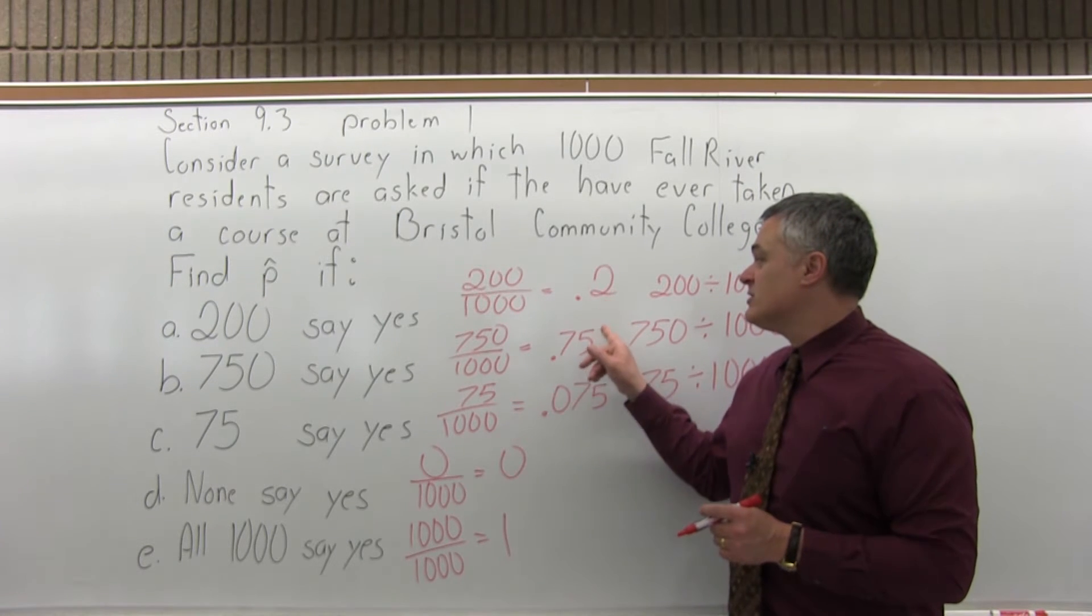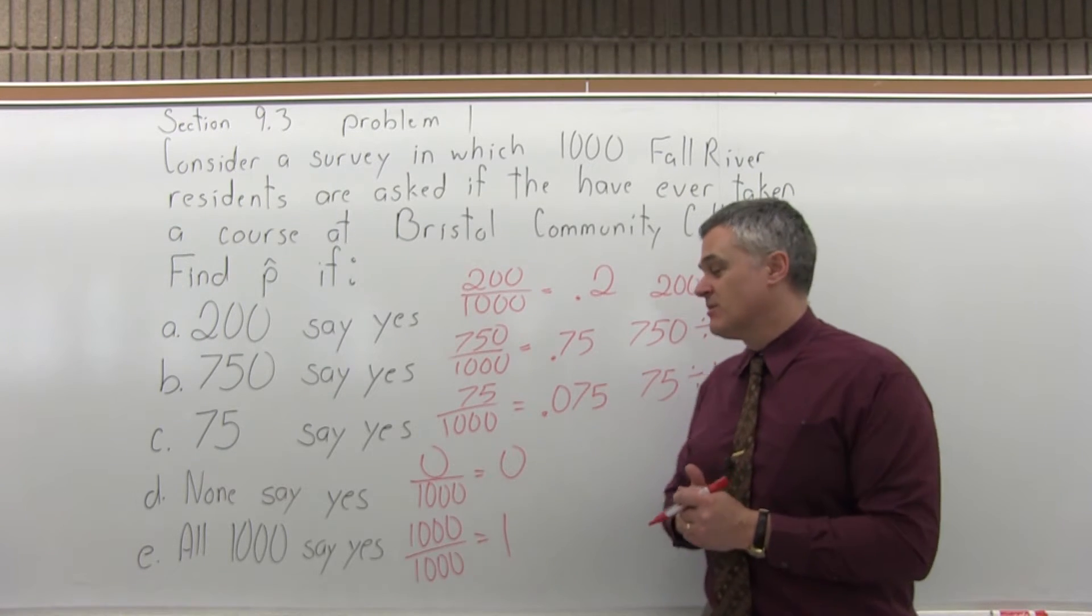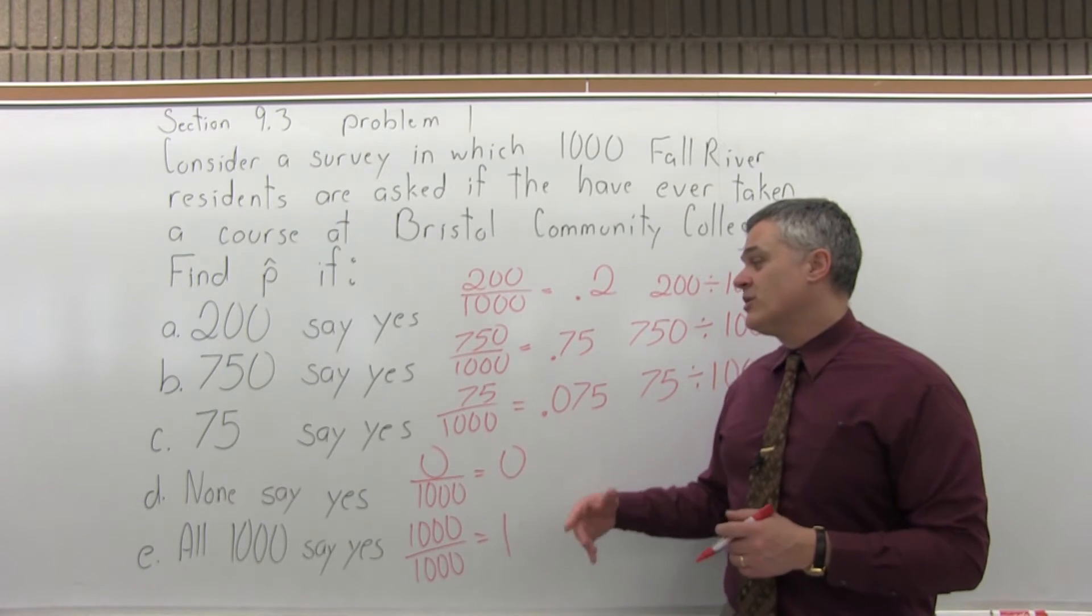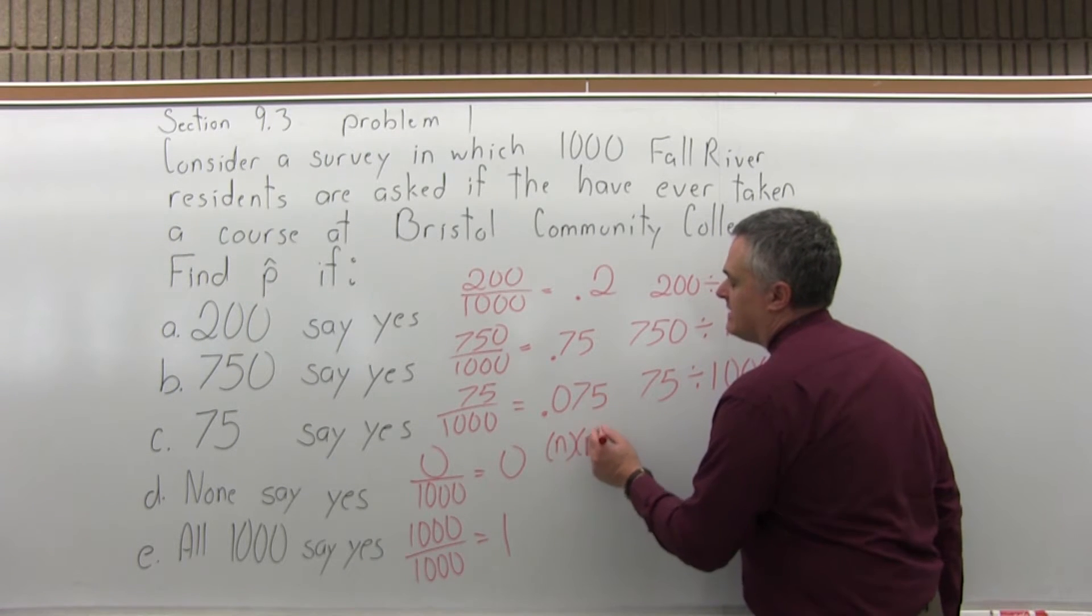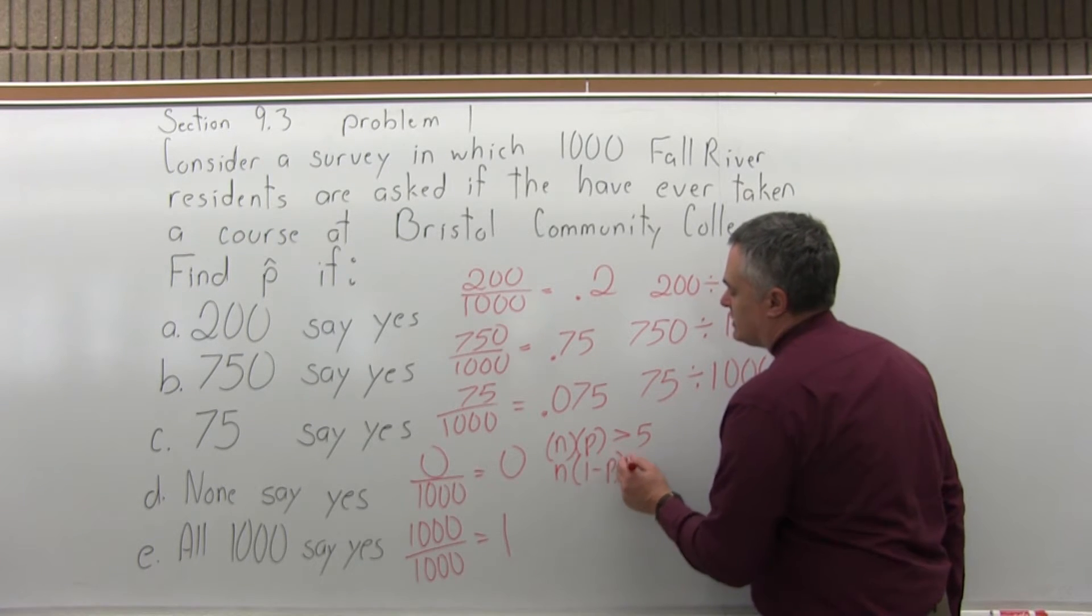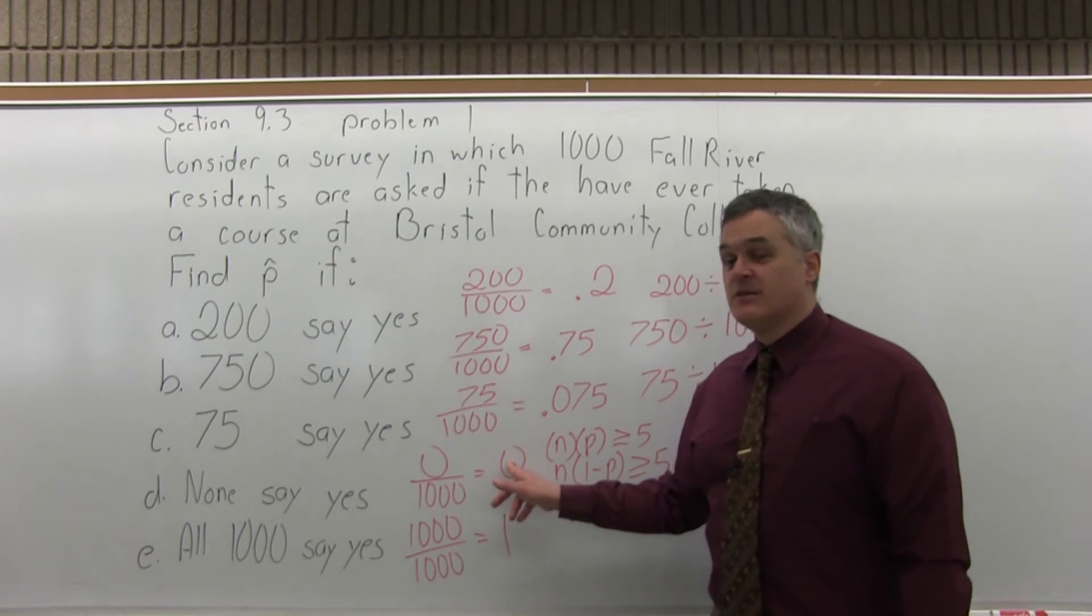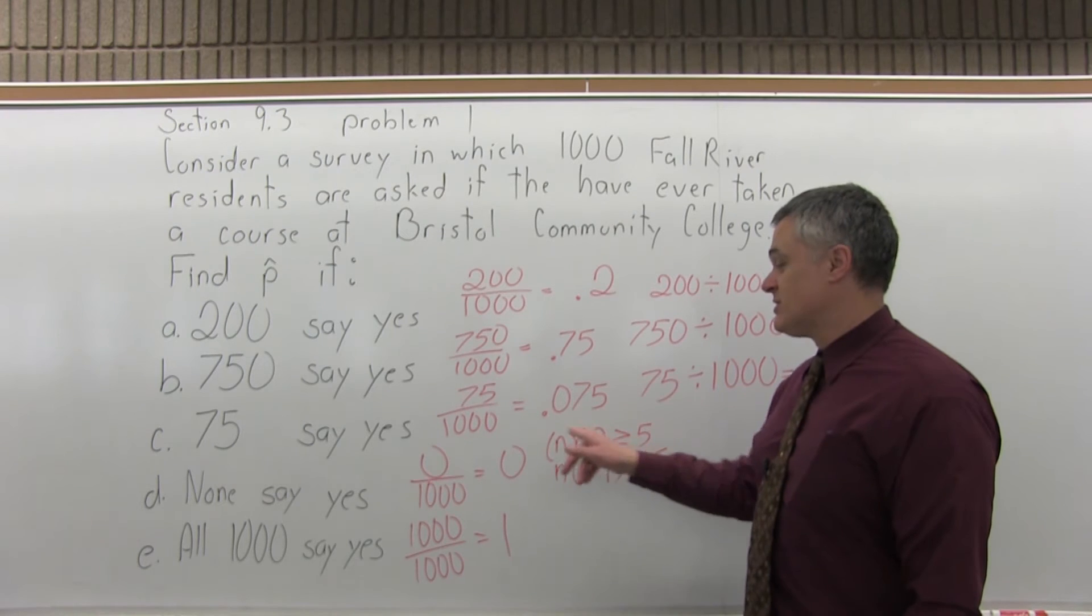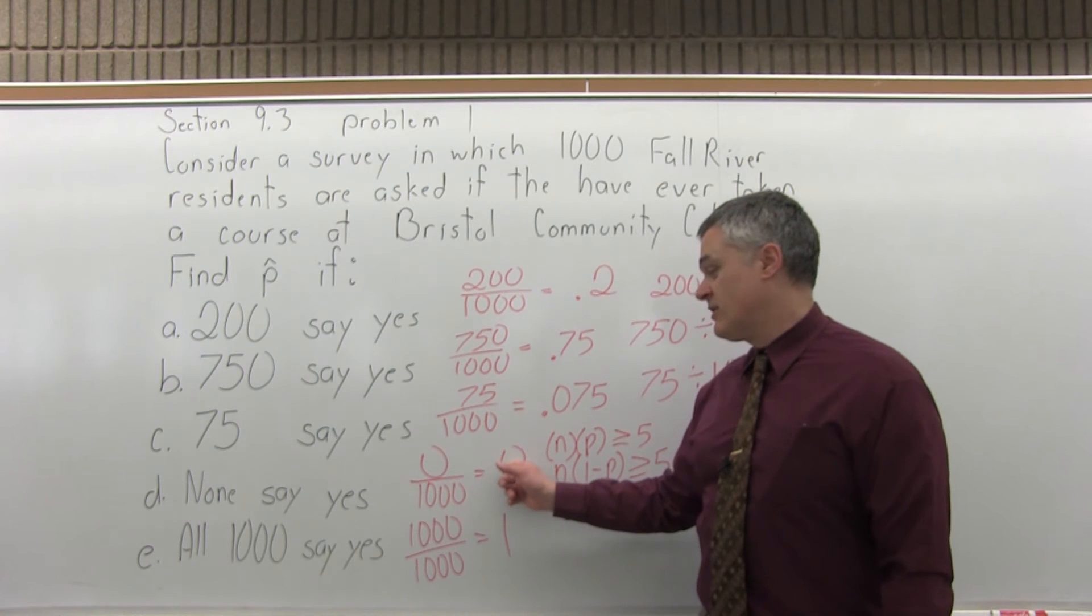The first three values for P-hat would be fine to make a confidence interval for the population proportion. The last two would not. In order to find your confidence interval, you have to verify that n times P is at least equal to 5, and that n times 1 minus P is also at least equal to 5. If P is 0, then 1,000 times 0 is not bigger than 5. So this would fail. You actually could not find a confidence interval for the population proportion where your value of P-hat is 0.